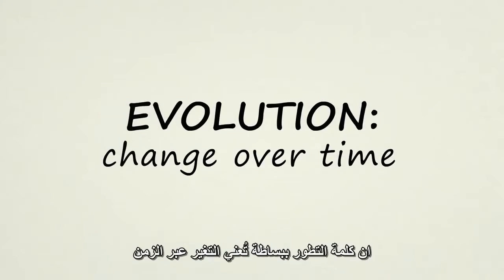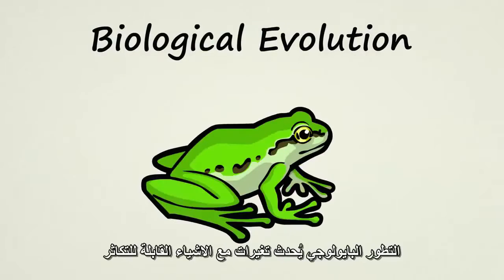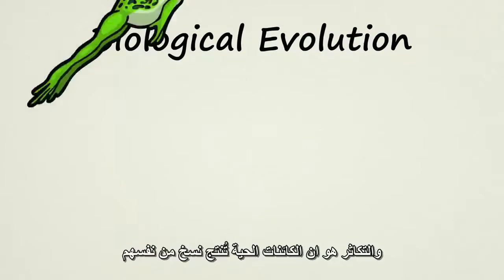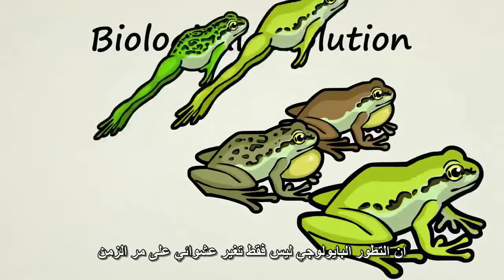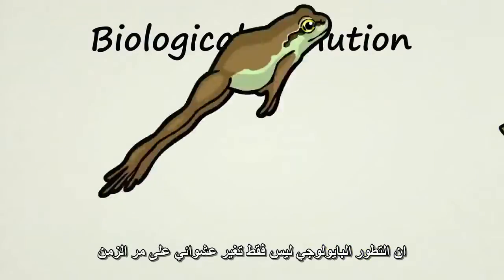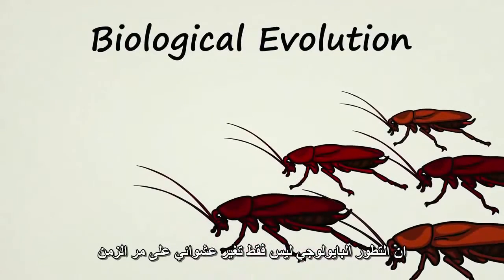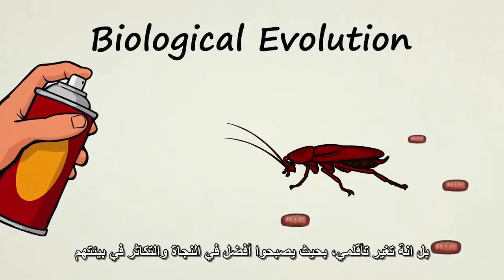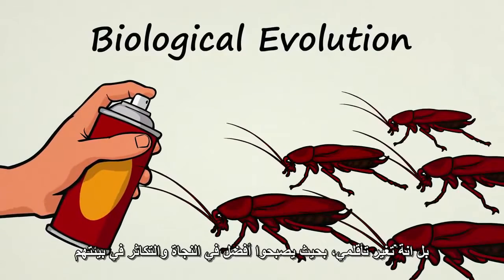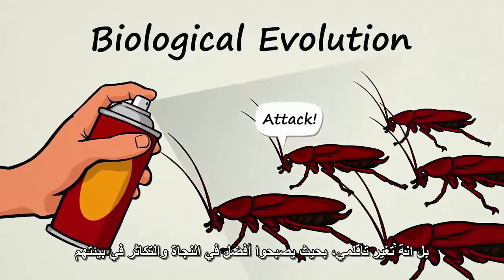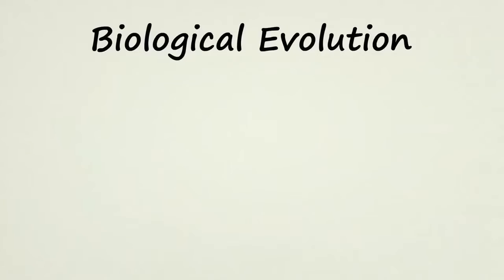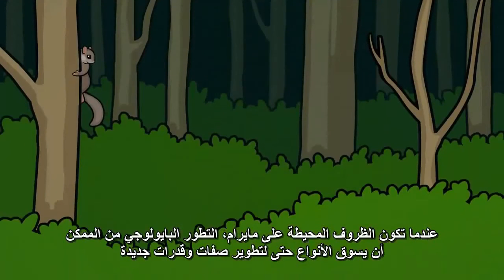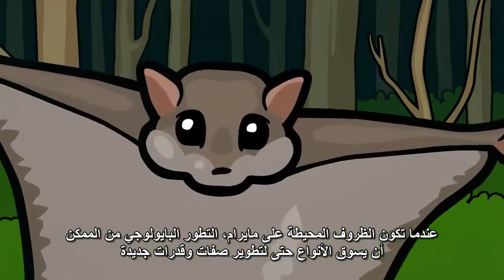The word evolution simply means change over time. Biological evolution deals with changes in things which are able to reproduce. Living creatures make copies of themselves. The change over time that we see in biological evolution is not just random change — oftentimes it is adaptive change. Populations become better able to survive and reproduce within their environments. When conditions are right, biological evolution can even drive a species to develop brand new characteristics and abilities.